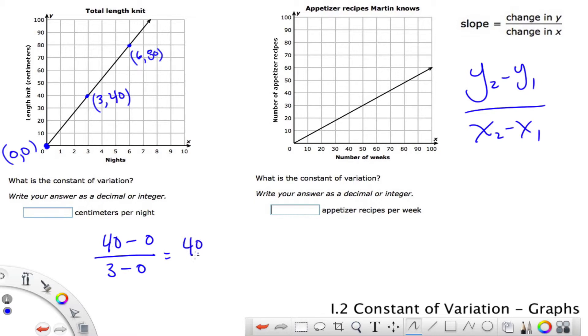So y sub 2 minus y sub 1 over x sub 2 minus x sub 1. Notice what happened. This is why 0, the origin, is a great point to use, because it's easy to subtract 0. 40 minus 0 is 40. Divide by 3. And so then we just have to do a little short division. So 3 goes into 40 once with 1 left over. 3 goes into 10 three times with, oh, we better add a decimal here, with 1 left over. It goes in there three times with 1 left over. And hopefully you can see this is just 3, 3, 3, repeating. Right, your answer's a decimal. We're out to the nearest hundredth. In this case, we'll say 13.33 centimeters per night.